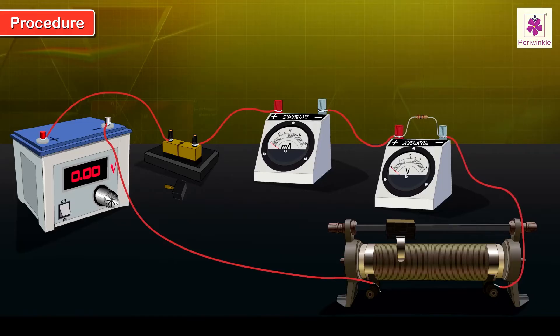Step 3: Set the regulator of the variable DC power supply to obtain a low PD, say 0.2V. Switch on the DC current and then insert the plug in the plug key switch.